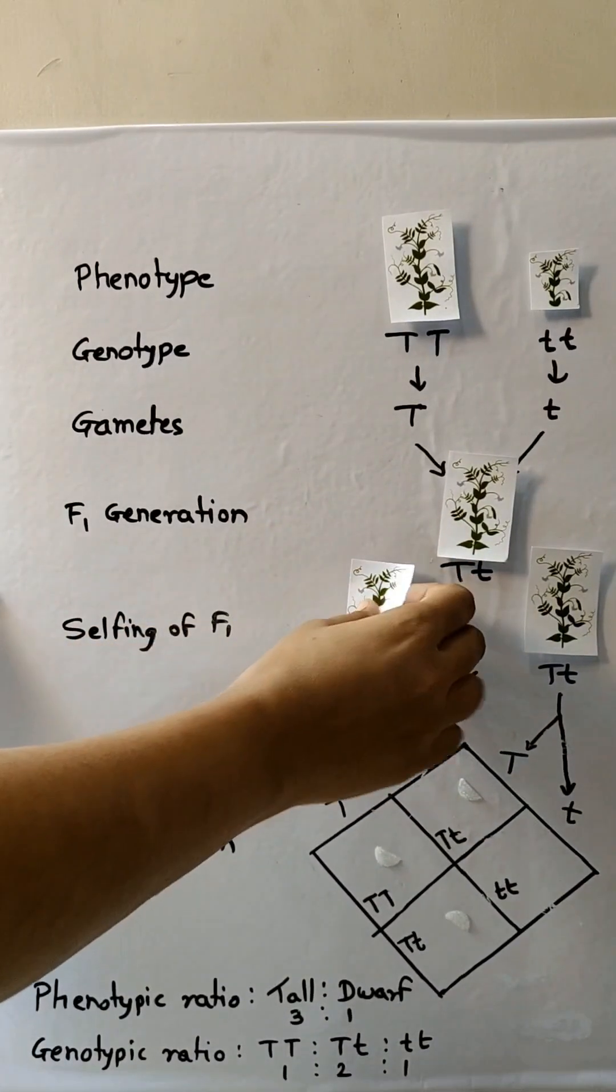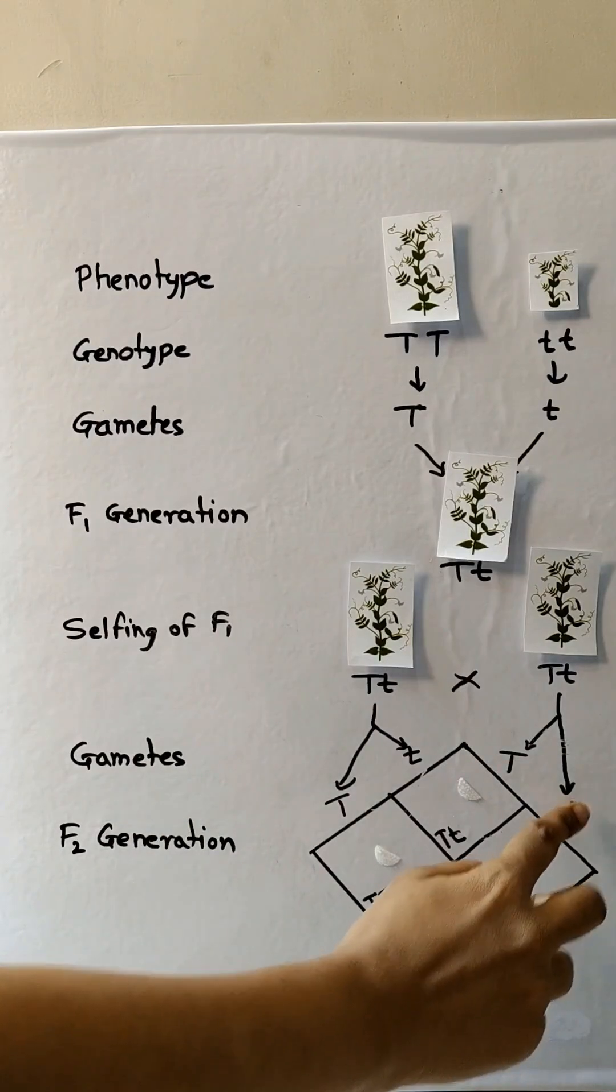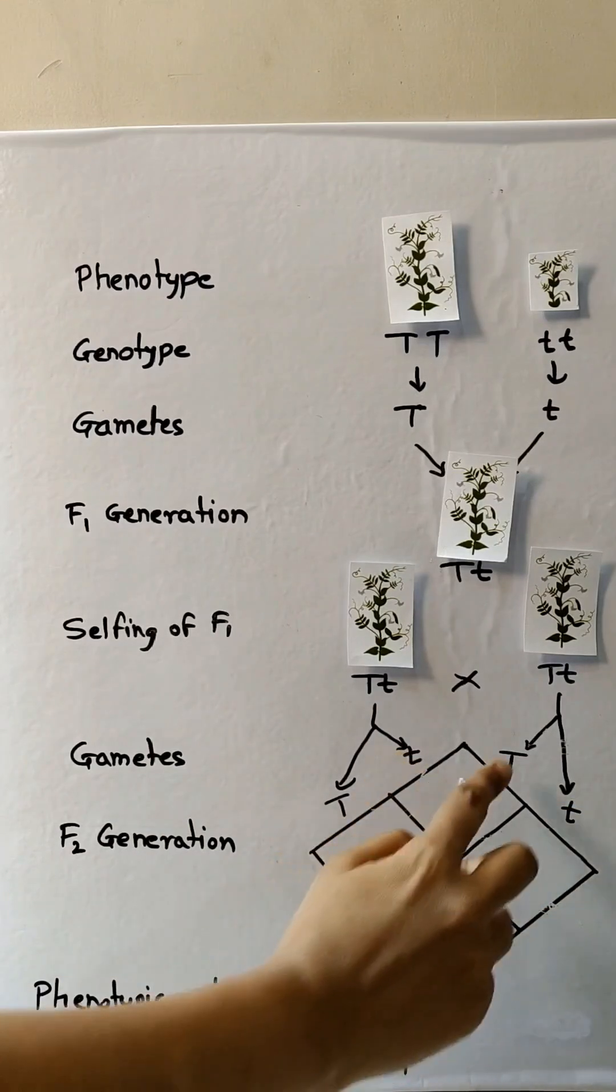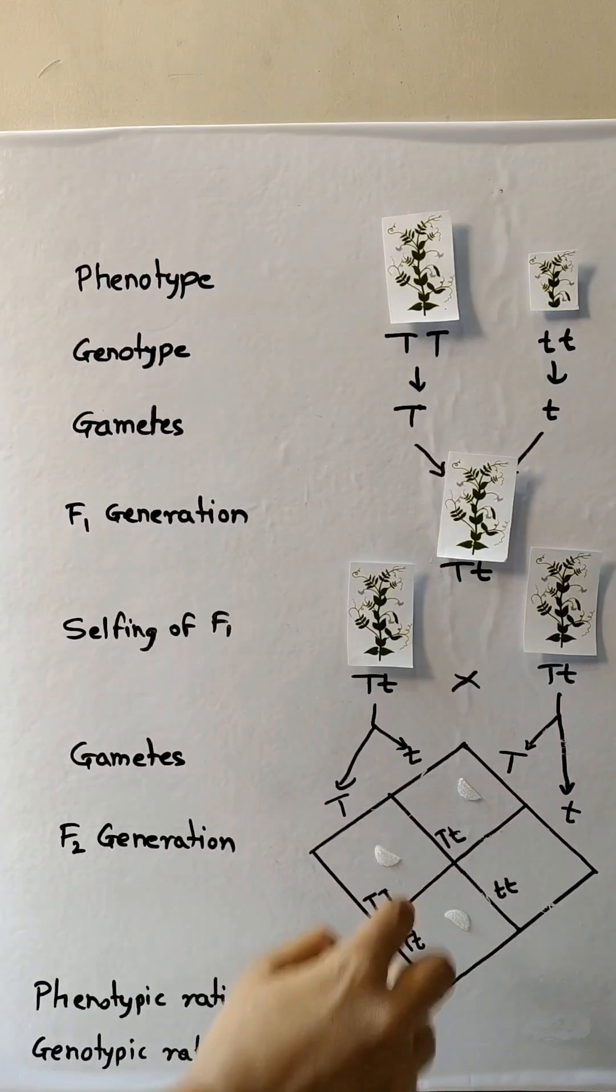Now selfing, we will do the selfing of this F1 generation. Then after fertilization we will get the plants that are small t small t, and capital T capital T.